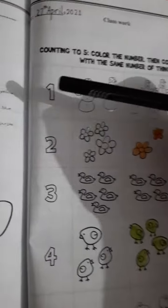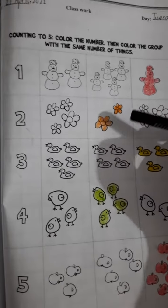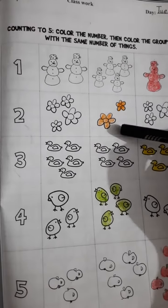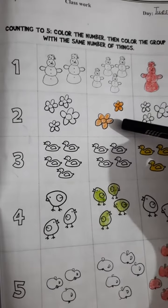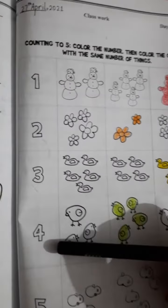Color the number two and now count and color in two flowers. Next is three, color three ducks. Four, color the four objects.